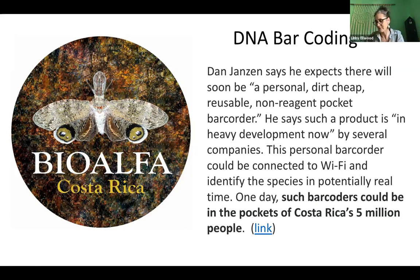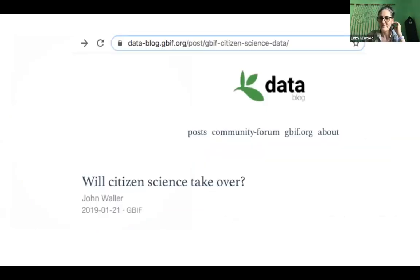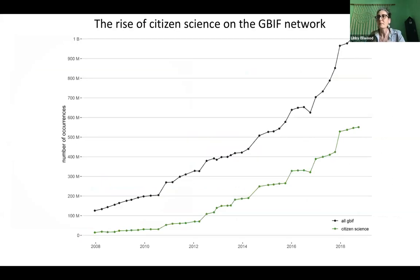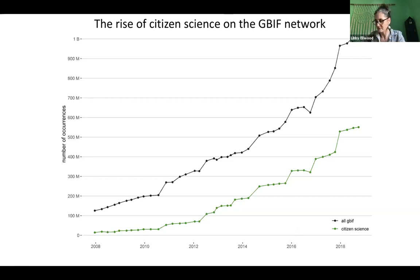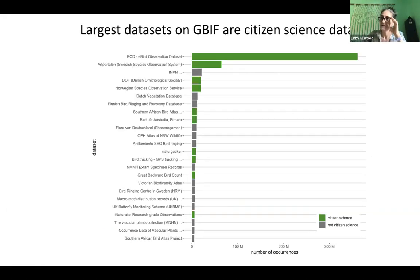I want to spend a few minutes looking at data collected through apps that end up in sites like GBIF. A big thank you to John Waller, who provided some figures I'm using to demonstrate how far citizen science has come. The rise of citizen science on the GBIF network is really astonishing. As of January 2019, citizen science data make up over half of all occurrence data in GBIF, and most of the large datasets on GBIF are citizen science datasets — with eBird having a particularly strong hold.